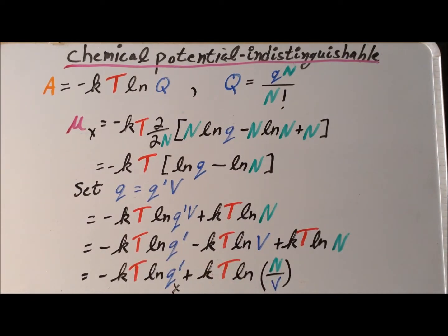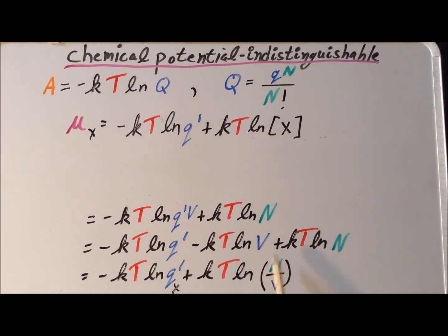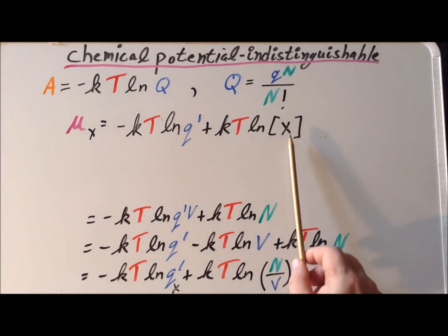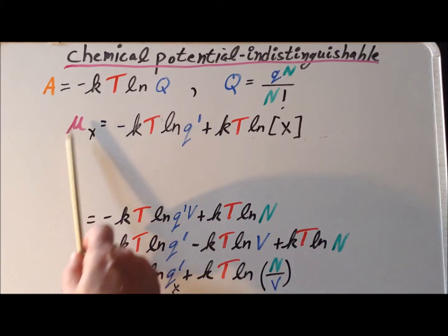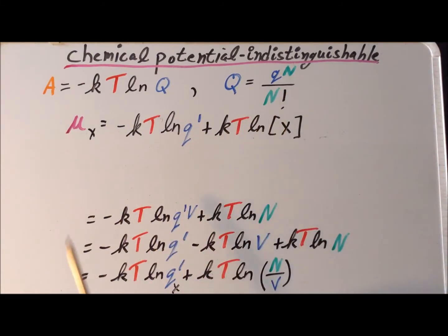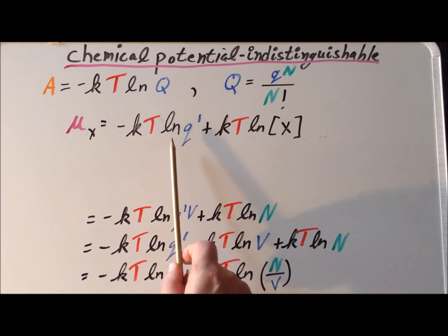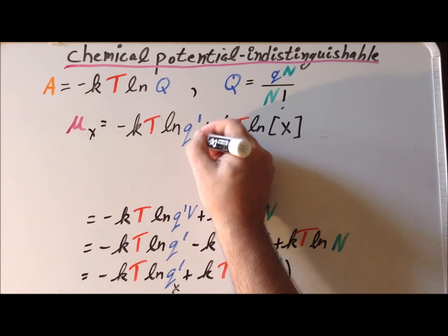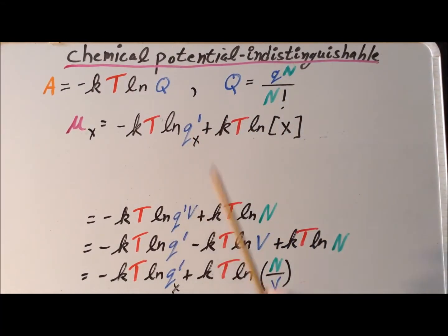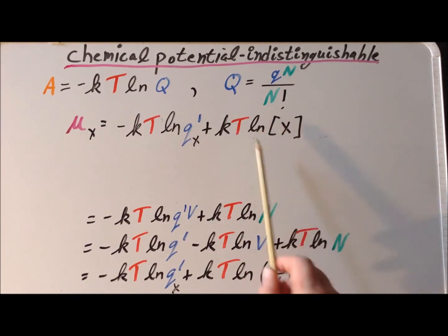Next, we apply the property of logarithms to combine the second and third terms, giving minus KT natural log of q-prime for X plus KT times the natural log of N divided by V. Finally, we recall that N divided by V — the number of particles divided by the volume — is nothing more than the concentration, the molar concentration of substance X. So as a final result, the chemical potential equals minus KT times the natural log of q-prime for X — the partition function divided by the volume — plus KT times the natural log of the molar concentration of X.